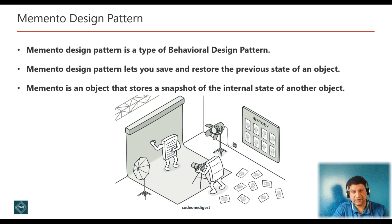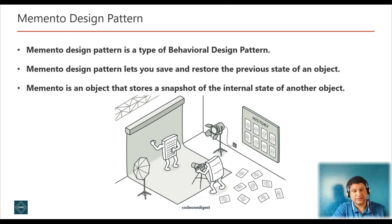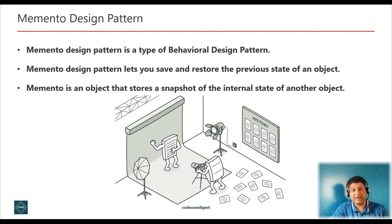Memento design pattern is a type of behavioral design pattern that lets you save and restore the previous state of an object without revealing the details of its implementation. A Memento is an object that stores a snapshot of the internal state of another object. This pattern allows you to save the internal state of an object so you can restore it later.